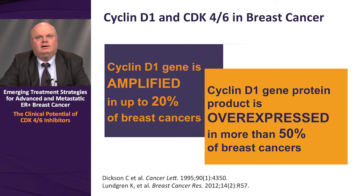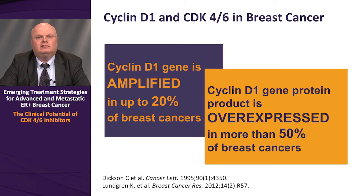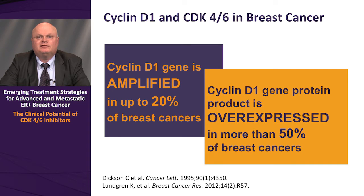In terms of expression in breast cancer, cyclin-D1 is frequently dysregulated. In some instances, the dysregulation occurs at the level of gene amplification, where in up to 20% of breast cancers the gene itself can be amplified, resulting in overexpression and constitutive activation. Even in cases without amplification of the cyclin-D1 gene, cyclin-D1 protein can be dysregulated, resulting in overexpression in as much as half of all human breast cancers.